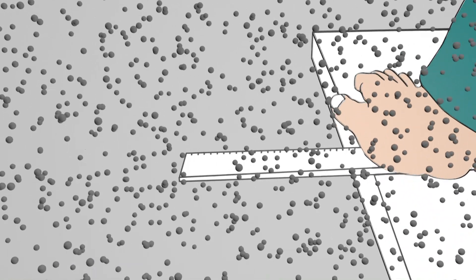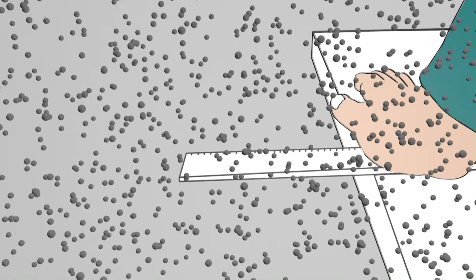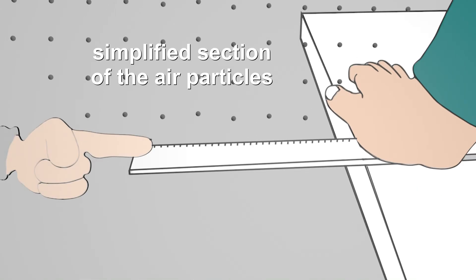In order to be able to recognize what happens when the ruler swings back and forth, let's consider a simplified section of these air particles.